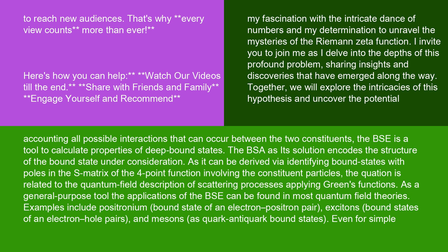Examples include positronium, bound state of an electron-positron pair, excitons, bound states of an electron-hole pairs, and mesons, as quark-antiquark bound states.